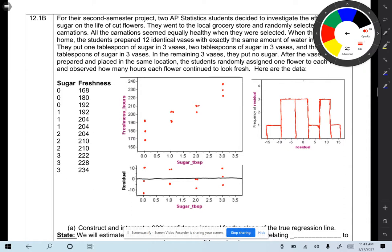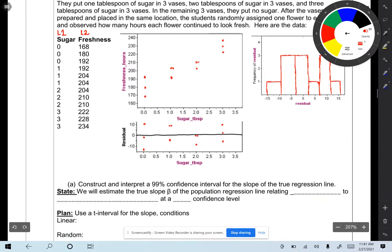After the vases were prepared and placed in the same location, the students randomly assigned one flower to each vase and observed how many hours each flower continued to look fresh. Here are the data. So the tablespoons of sugar could be list one, and the hours of freshness would be list two. So the first thing you want to do is make a scatter plot, and here are the steps.